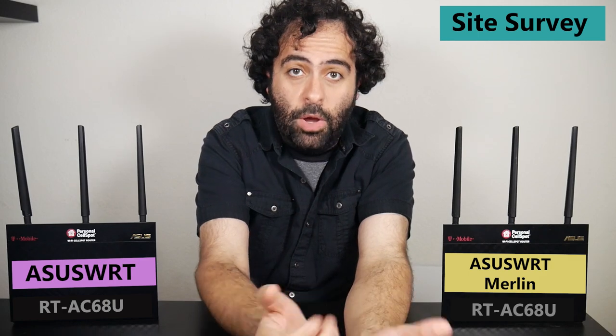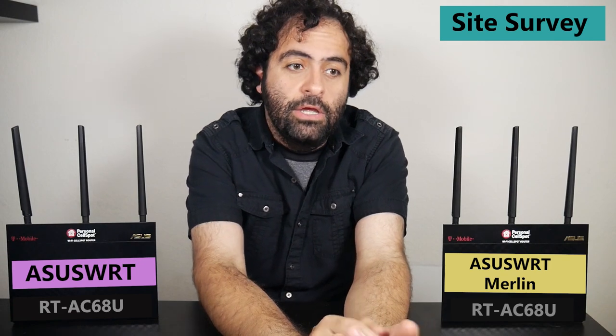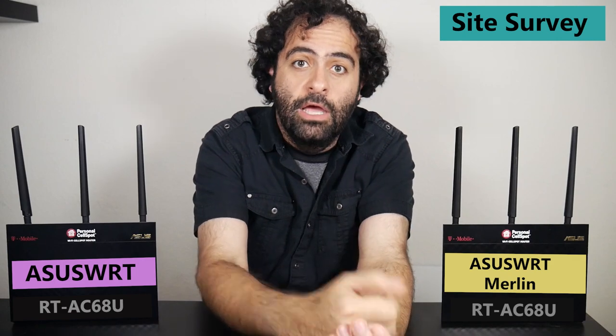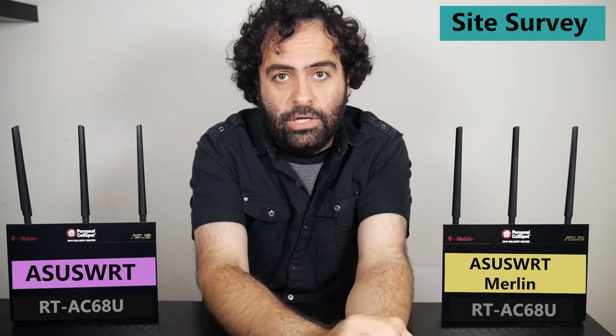Number five is the site survey feature that's only available in the Merlin firmware. I have a habit of checking the wireless channels of my wireless networks every now and then to make sure I'm using the least utilized, least crowded channel in my area. One good tool that can help me determine that is the site survey feature, and it's very convenient to have it in the web interface of the wireless router.